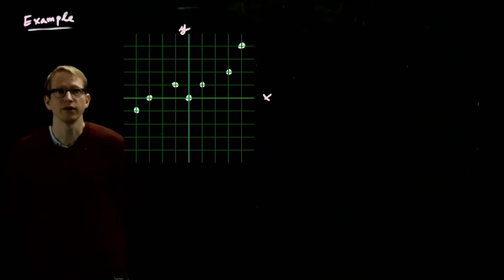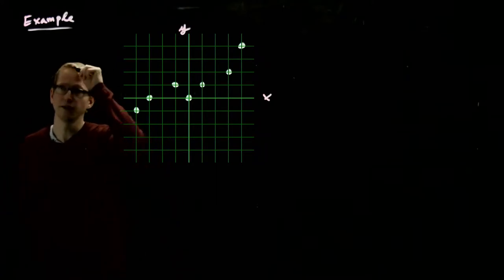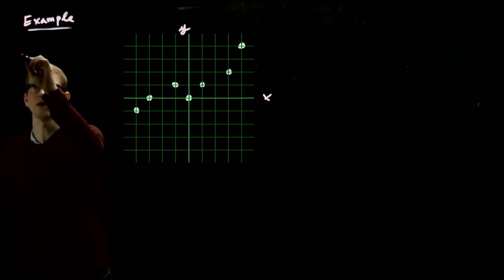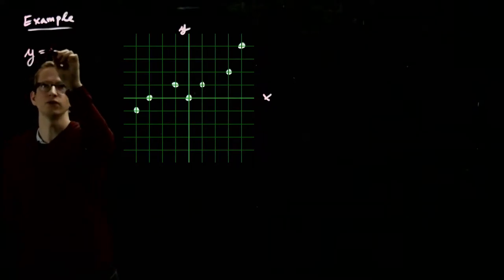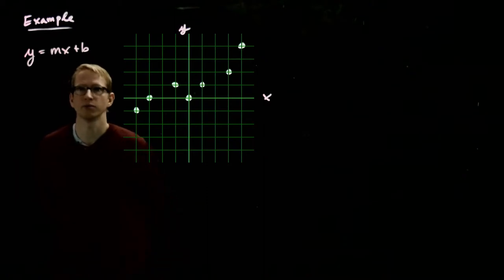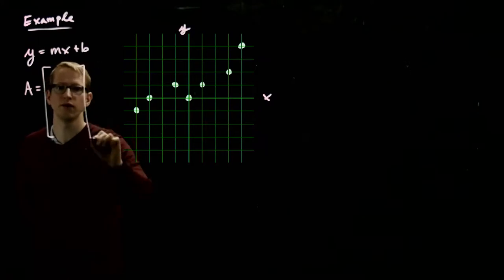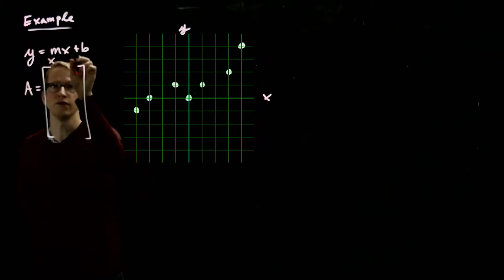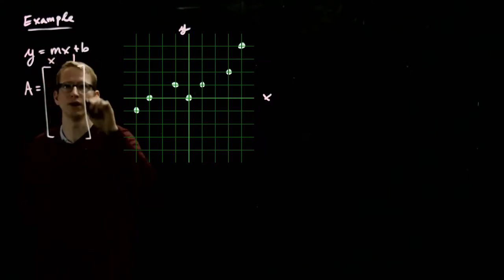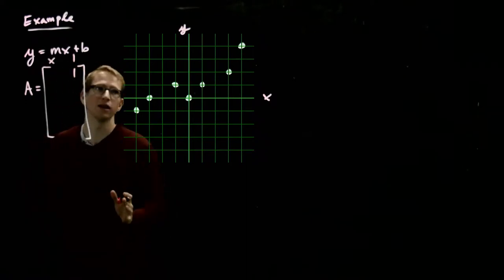So the data that we're given according to this plot is we have our data vector and we want to try to fit to a line of the form y equals mx plus b. So let's write down our matrix A. And our matrix A, remember, consists of all of the x's, if we write it in this form, and 1's all along the right column.